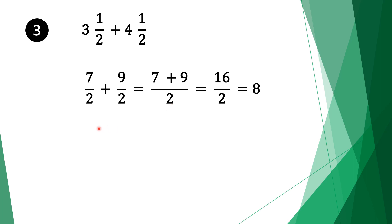We take the common factor of 2. 2 divided by 2 is 1, 1 times 7 is 7. Move along the plus sign. Do the same for the second fraction: 2 divided by 2 is 1, 1 times 9 is 9. We add 7 plus 9 which is 16, and bring the 2 as the denominator. Top and bottom are divisible by 2: 16 divided by 2 is 8 and 2 divided by 2 is 1, so our solution is 8.